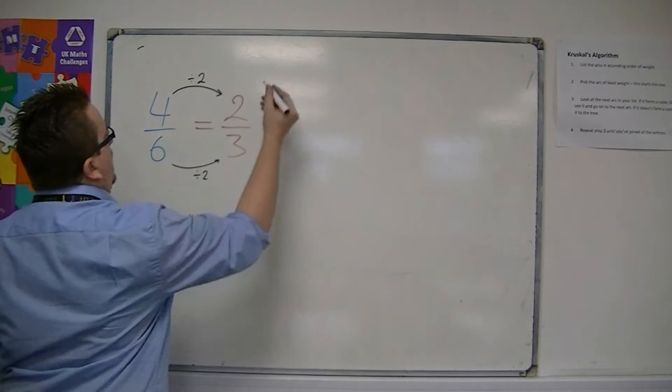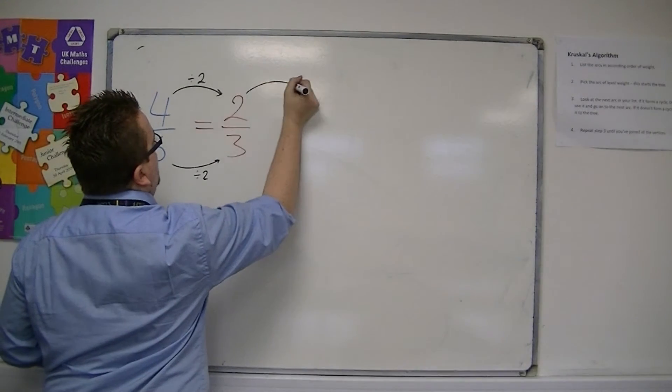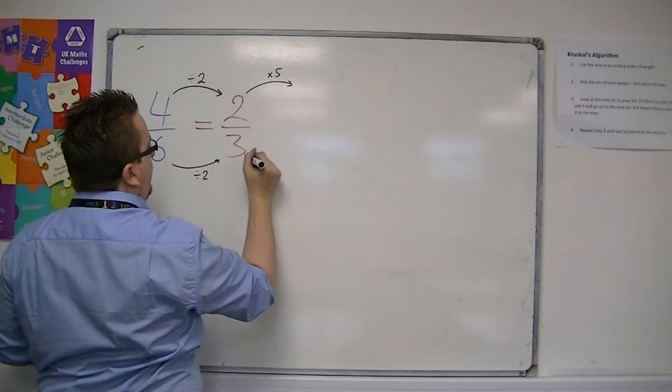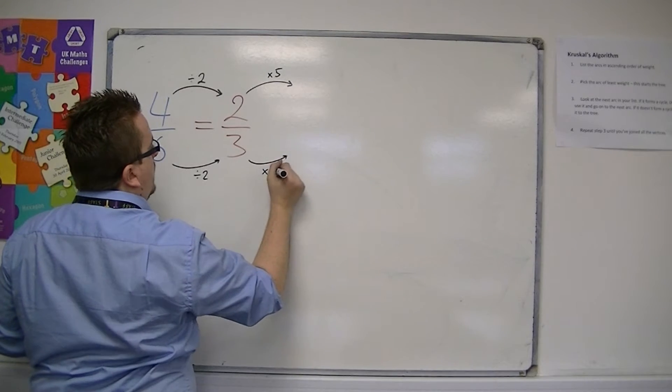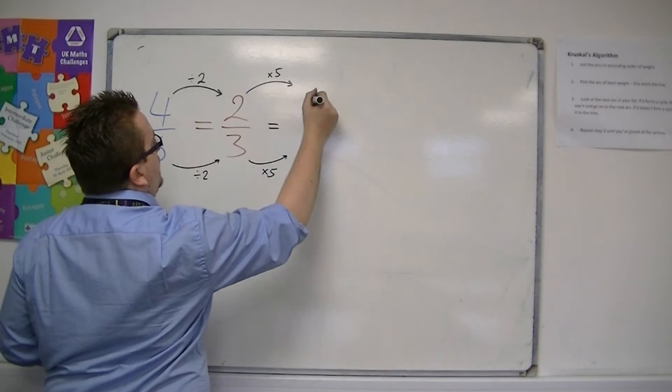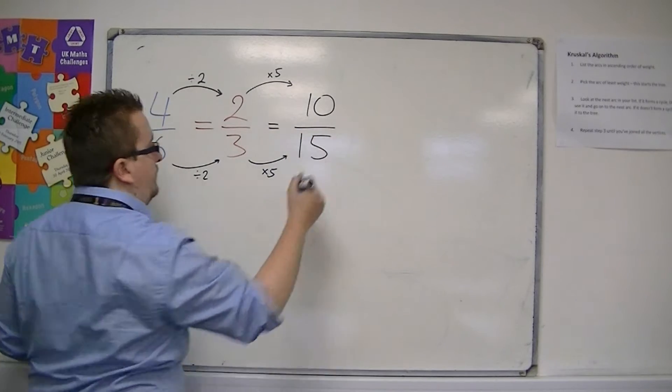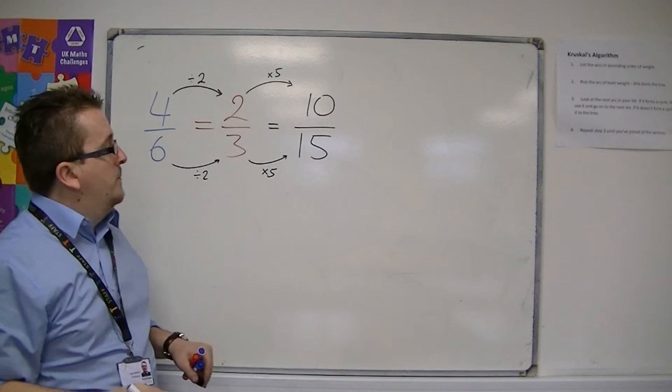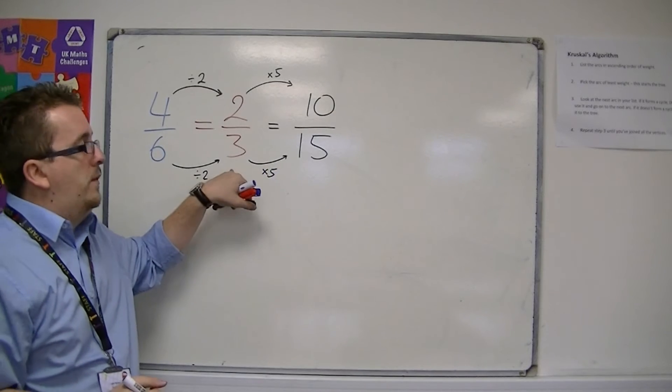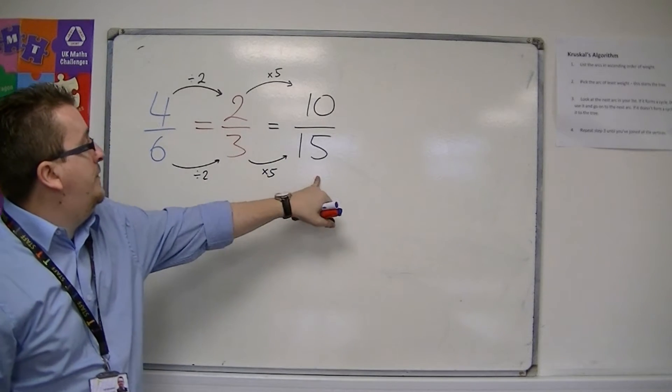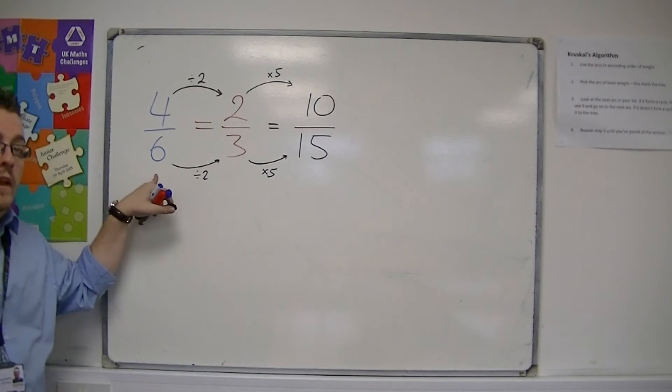For example, I could multiply top and bottom of this fraction by 5. And I would get 2 times 5 is 10, 3 times 5 is 15. So 10/15 is equivalent to 2/3, and 10/15 is also equivalent to 4/6.